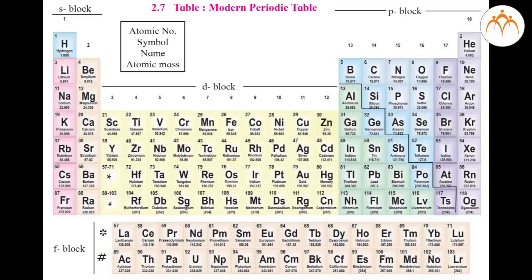If you look at the right-hand side of the periodic table, there is a zigzag line that separates metals from non-metals. In group 14, the first element is carbon, which is a non-metal. The next two elements, silicon and germanium, are metalloids, and the remaining elements, tin and lead, are metals. The borderline elements — boron, silicon, germanium, arsenic, tellurium, and polonium — have properties of both metals and non-metals. Thus, they are called metalloids or sometimes semi-metals.